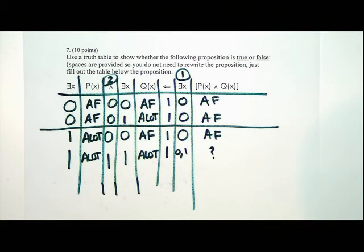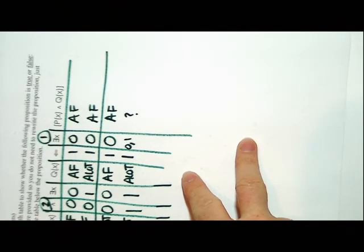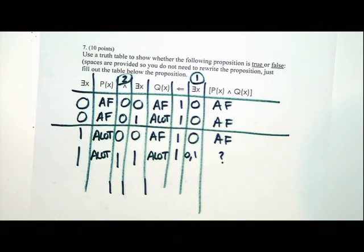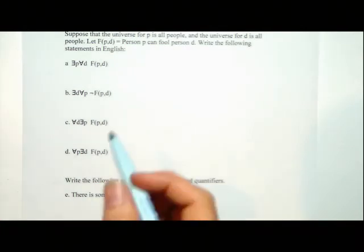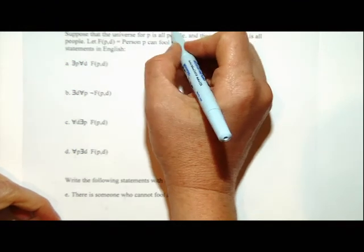If you like to make extra columns and need lots of room, you could turn your paper sideways and make your table however you want, or draw whatever columns you want. As long as we can grade it and tell what you did, you're fine. With a lot of nots on this problem, you're going to need some more columns.